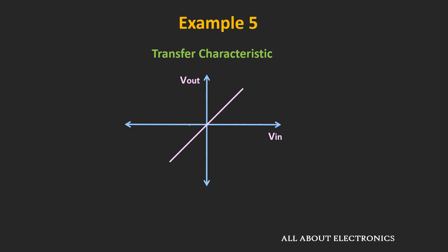For one particular circuit, if we have a straight line transfer characteristic, it means the output changes linearly with the input voltage. For some circuit, if the transfer characteristic shows that the output changes linearly with the input up to a certain voltage and then the output remains constant — or if the output is zero for negative input voltage and for positive input voltage it varies linearly up to a certain voltage and then remains constant — this transfer characteristic defines the relationship between the input and the output waveform.